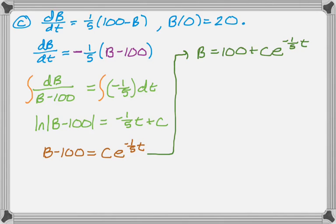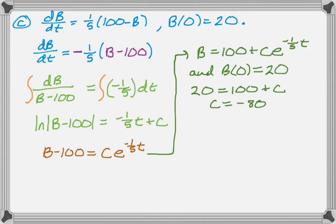So let's deal with the initial condition. So we have this, and we know that B(0) = 20, and so we plug in, and we get that. And so C is negative 80, and then we write our solution.